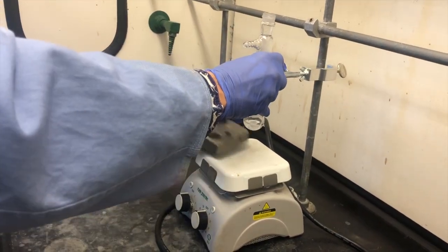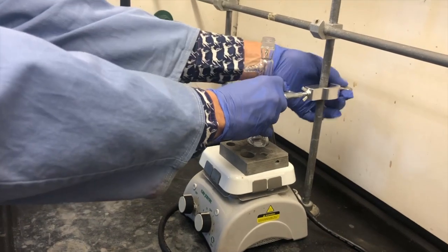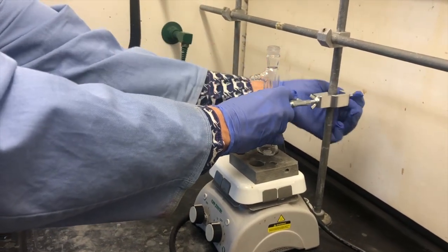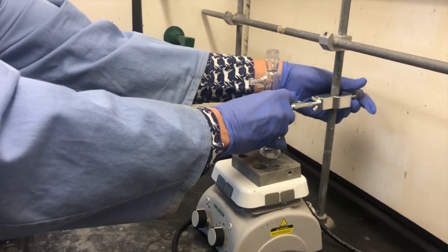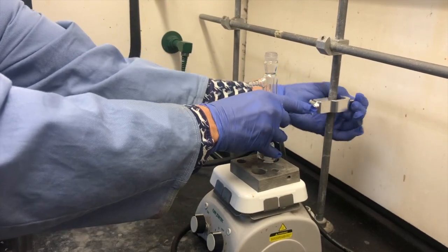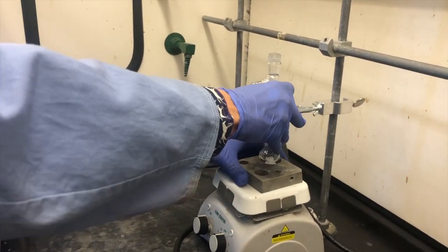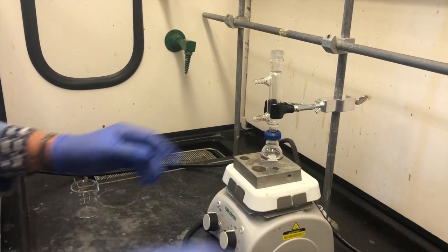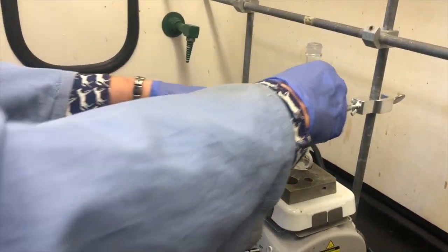Once we know we have the apparatus at the right height, we can place the aluminum block down and re-secure the clamp. Before turning on the heat, you need to attach the water hoses and make sure that they are secure and that the water is flowing.